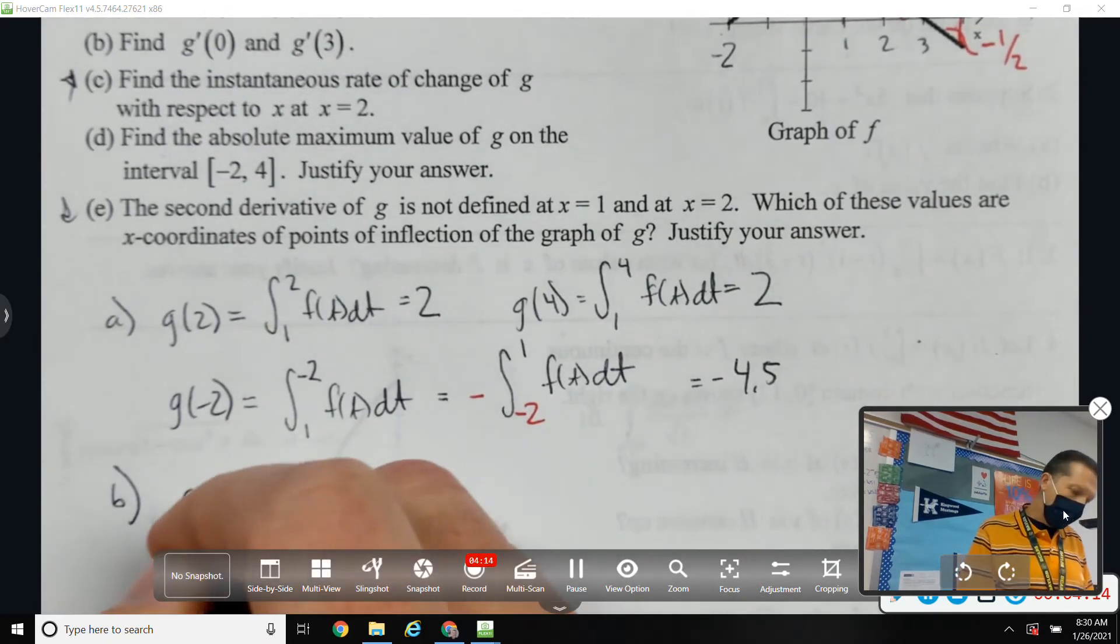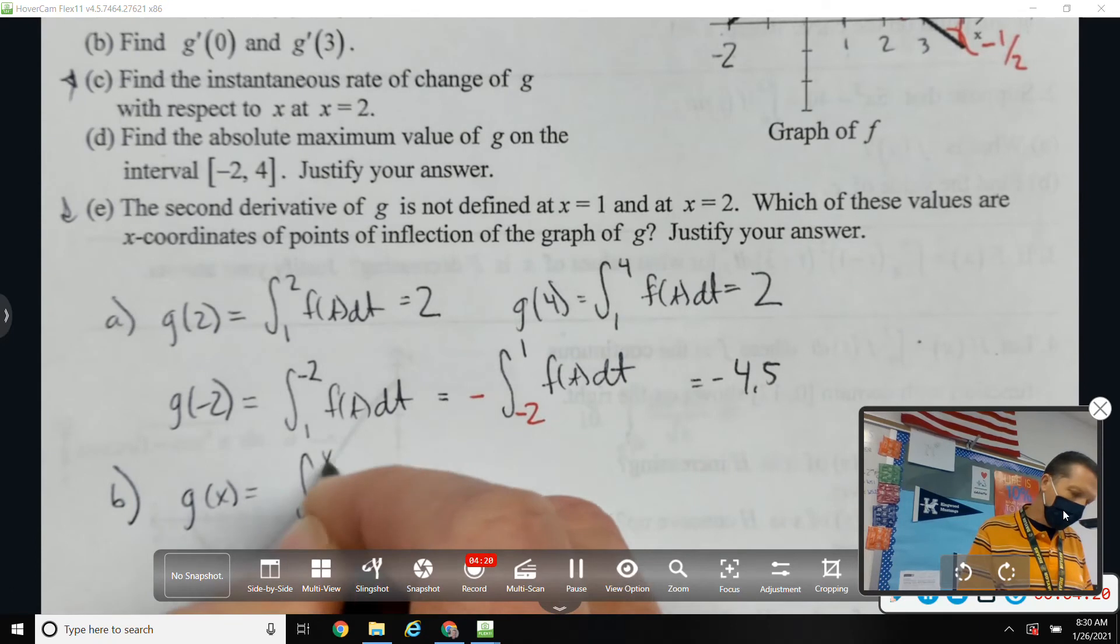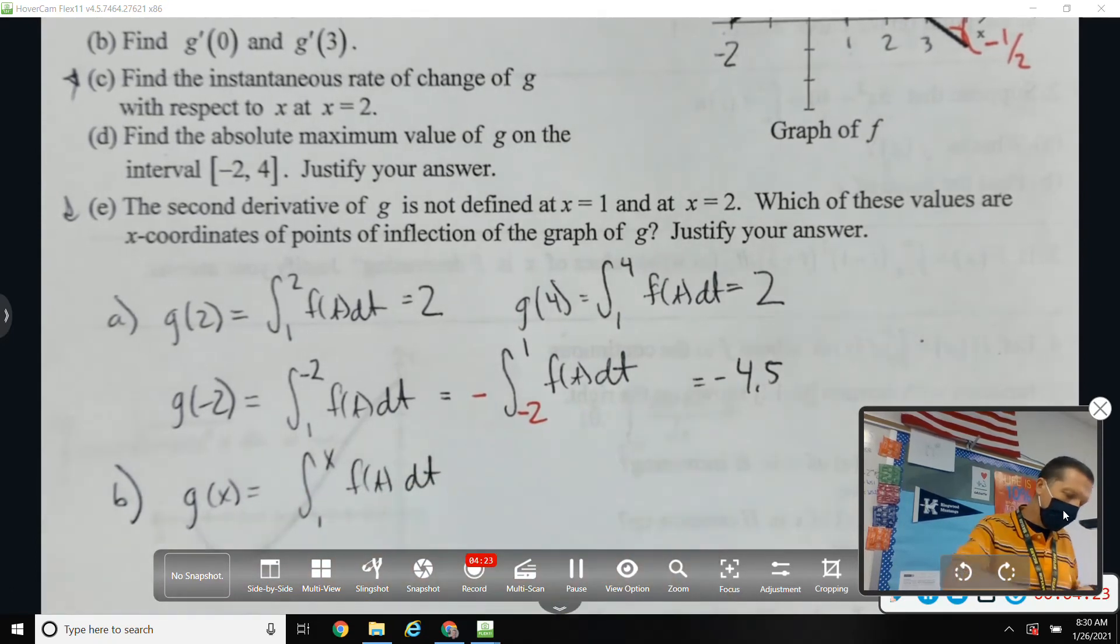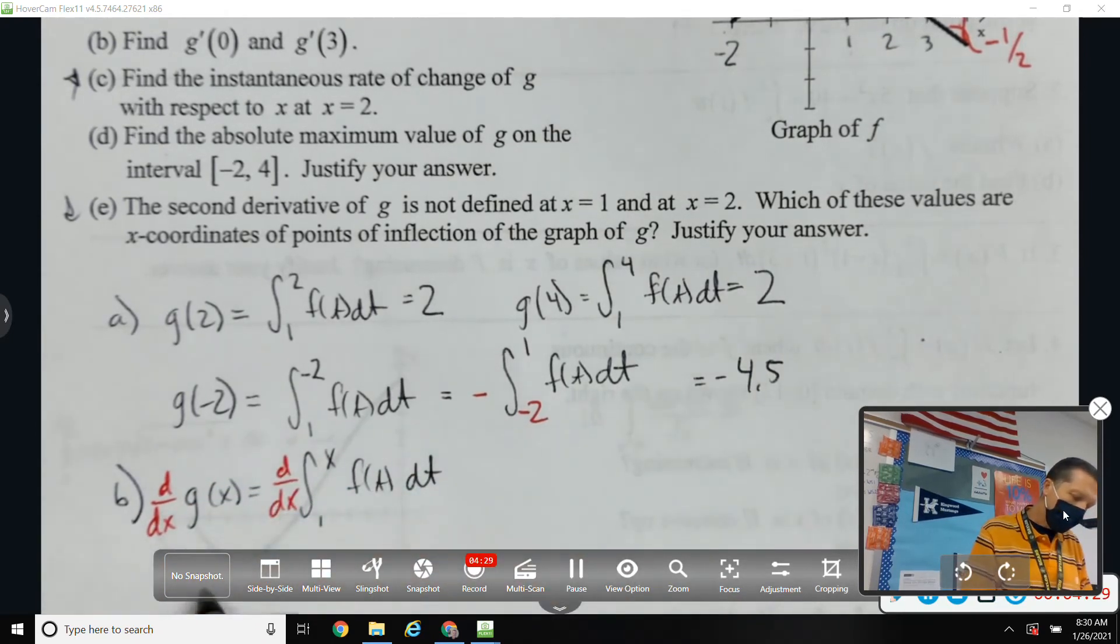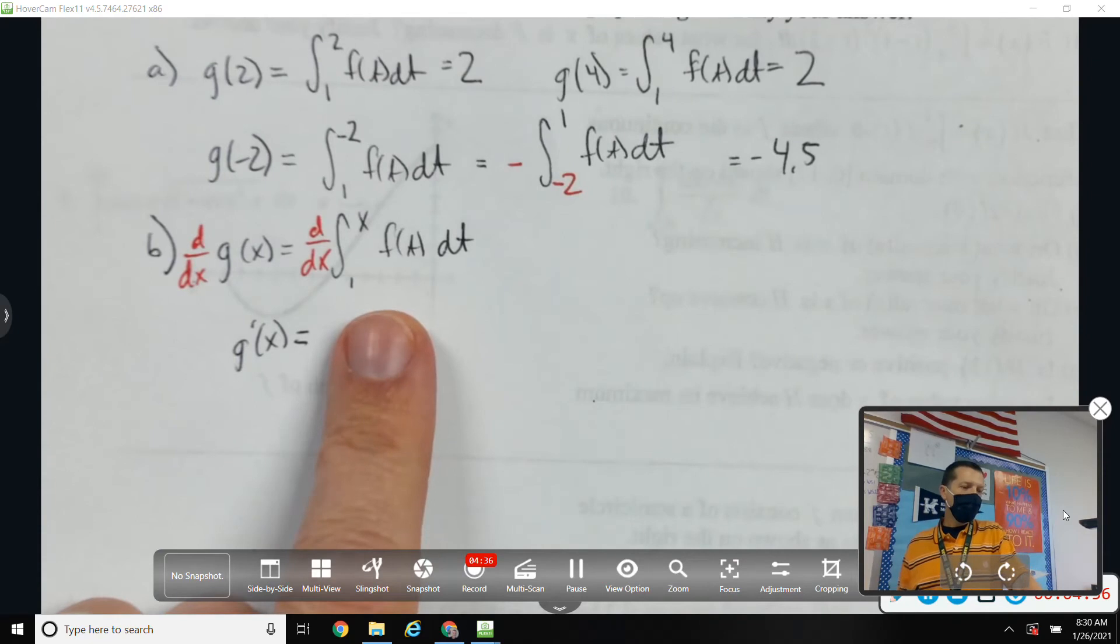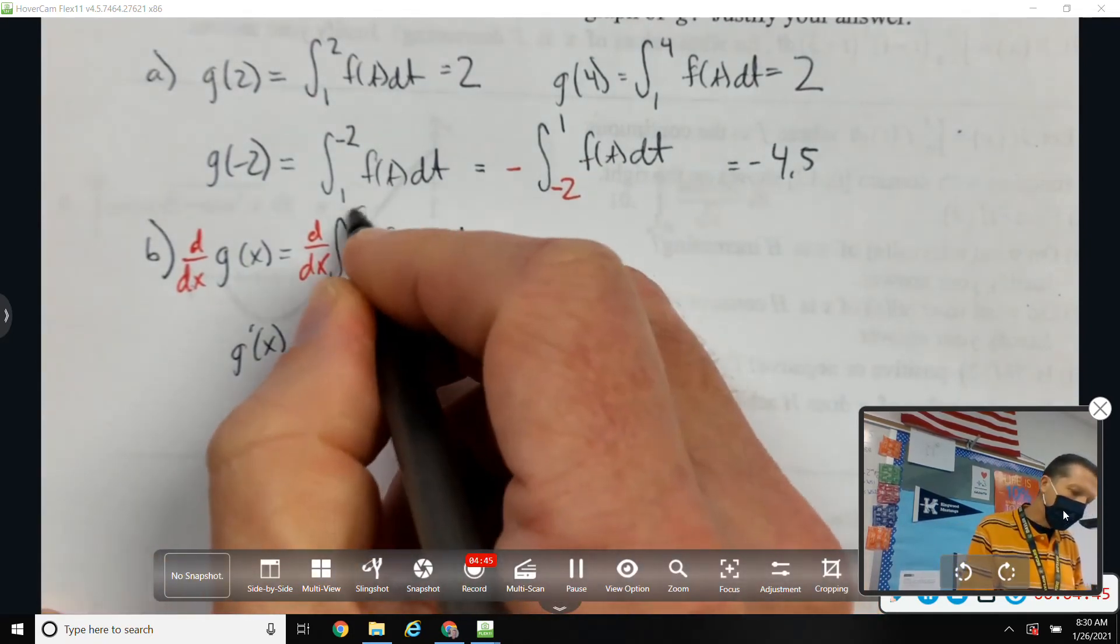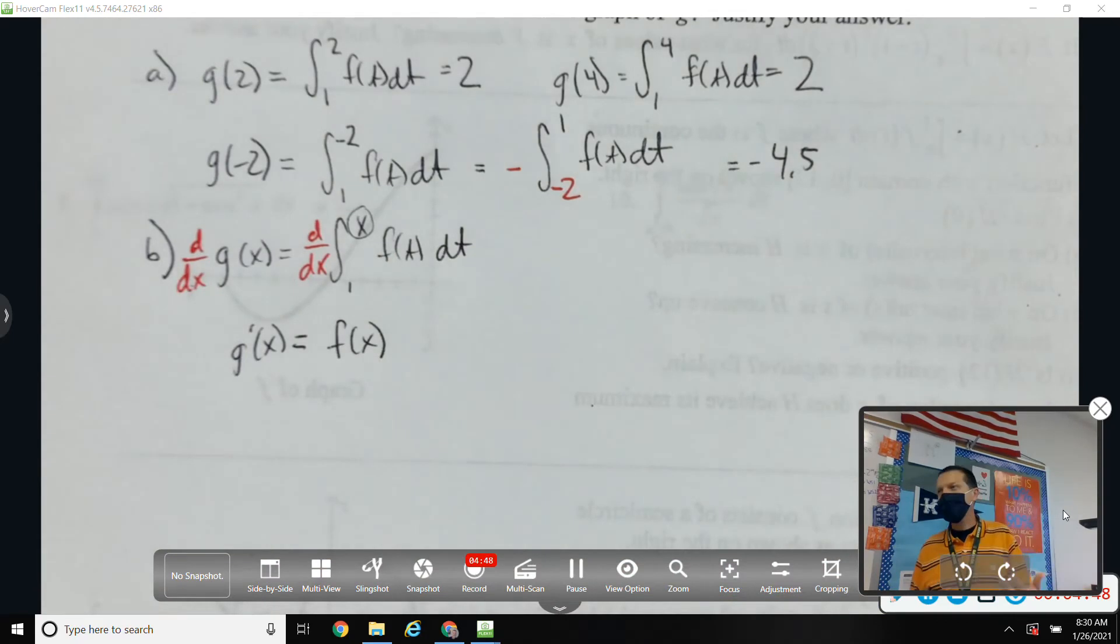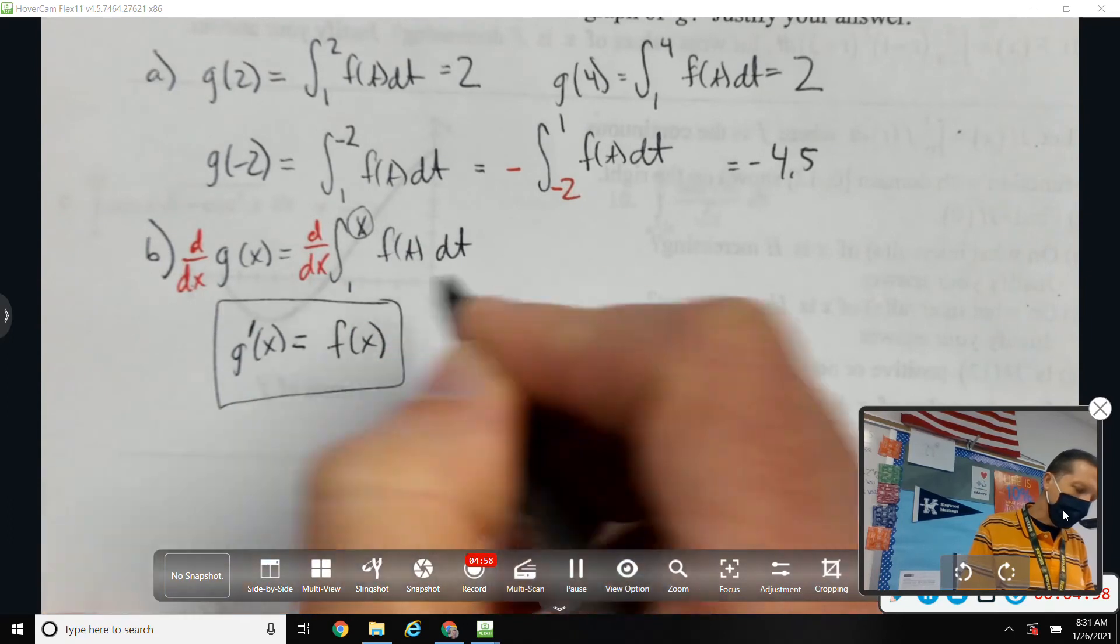Part B, find G prime of 0 and G prime of 3. Well, G is the integral from 1 to X of F of T, DT. So if I want G prime, I need to take the derivative. So the derivative of G would be G prime. What's the derivative of the integral of F? F of X. And then don't forget to think about the chain rule.